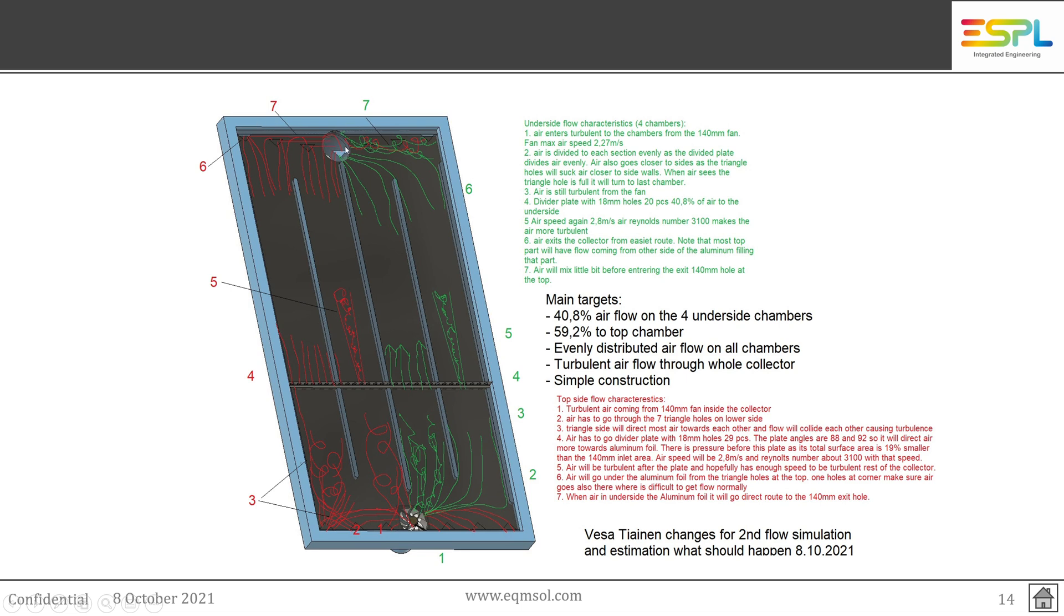So it should make this kind of high-speed turbulent cones moving air towards the bottom of the collector. I hope the position is such that it will have enough force to be turbulent all the way to the backside of the collector and then go through the holes nicely. So the position of this divider can be changed a little bit depending on how the second simulation looks.